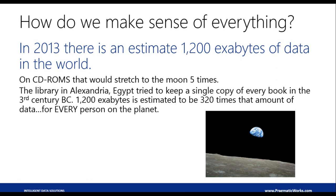There's also the great library in Alexandria, Egypt. When that library was founded, their goal was to keep a copy of every book in the world. If you take the size of the Alexandria library and compare it to our 1,200 exabytes of data, that would be about 320 times the amount of data inside that library for every person on the planet — for all over 6 billion people.